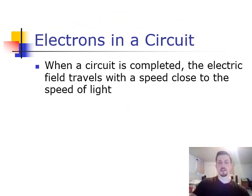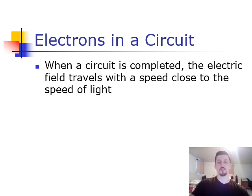It's important to remember that even though the net drift speeds of electrons in a circuit is very slow, when a circuit is completed, those electrons are all going to start moving nearly instantaneously. The electric field travels with a speed close to the speed of light. Basically what that means in realistic scenarios is that as soon as you close your circuit, you're going to have current flowing immediately.